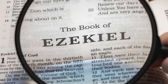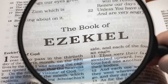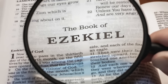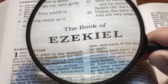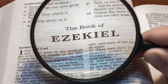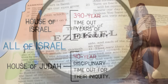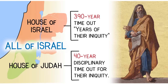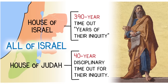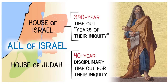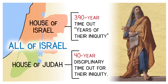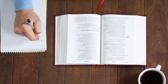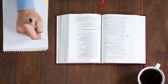As always, we invite the viewer to search out the scriptures, in this case Ezekiel 4, and see for yourself what it reveals, with the hope that our own investigation will be of some assistance along the way. In update number 6, we focused on Ezekiel 4 and the two houses of Israel, and the two specific prophetic events and numerical prophecies for the house of Israel and the house of Judah. We made a list of about a dozen questions in our previous update.